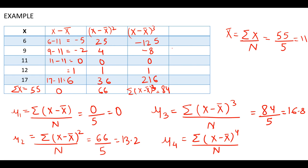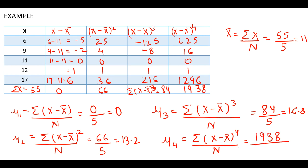For μ4 we need (x minus x-bar) to the power 4, which is simply squaring the squared deviations: 625, 16, 0, 1, and 1296. Summing these gives 1938. So μ4 = 1938 upon 5 = 387.6. We have now found our first four central moments: μ1 = 0, μ2 = 13.2 (which also equals our variance), μ3 = 16.8, and μ4 = 387.6. What these values represent — in terms of skewness and kurtosis — we will talk about in further videos.